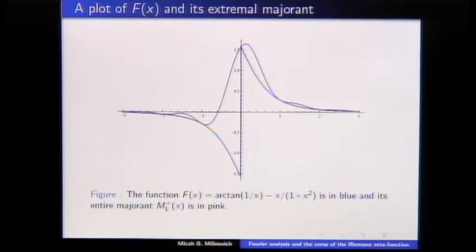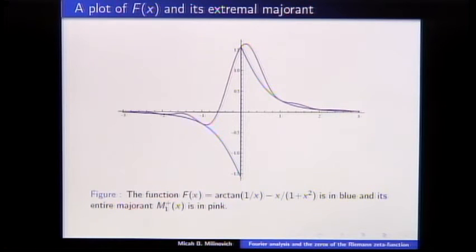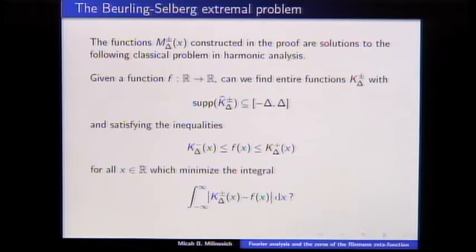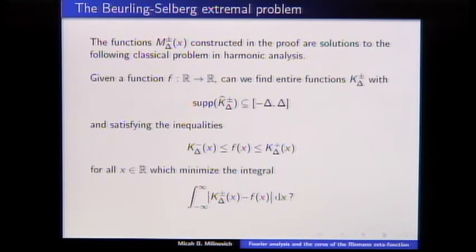We can construct these things explicitly. Here's what they look like for Fourier transforms supported in [-1,1]: the blue function is the arctangent function we want to approximate, and the pink function is our majorant — the minorant is antisymmetric. These are constructed from what's now called the Beurling–Selberg extremal problem: given a function F from R to R, can we find entire functions whose Fourier transforms are compactly supported — equivalently, of finite exponential type — that are either bigger or smaller than F, minimizing the L1 distance? That's exactly what Selberg did for the characteristic function of the interval, and what we needed to do for this arctangent function.